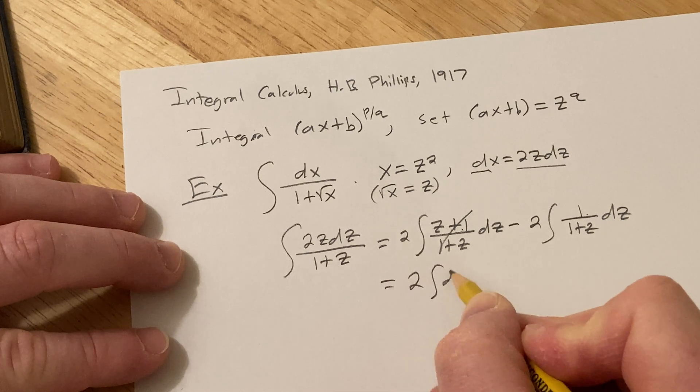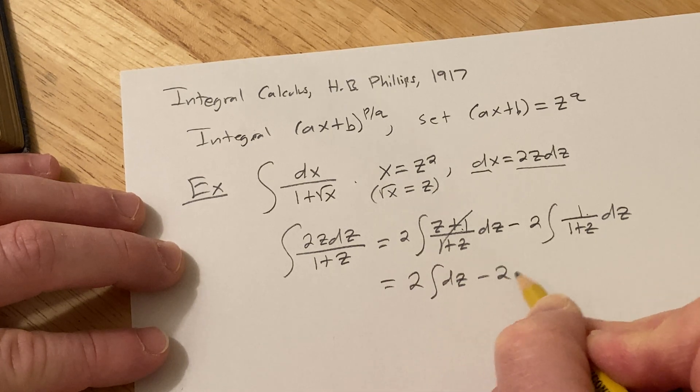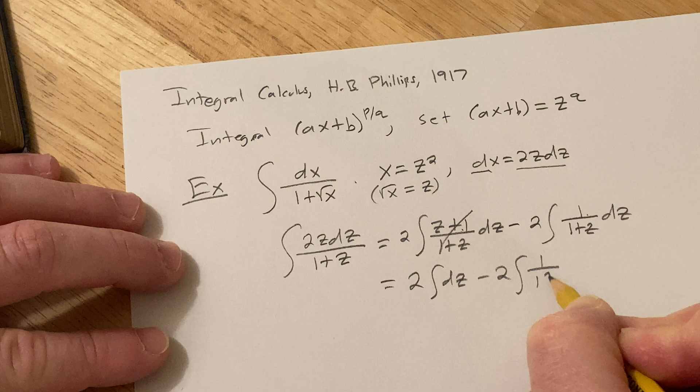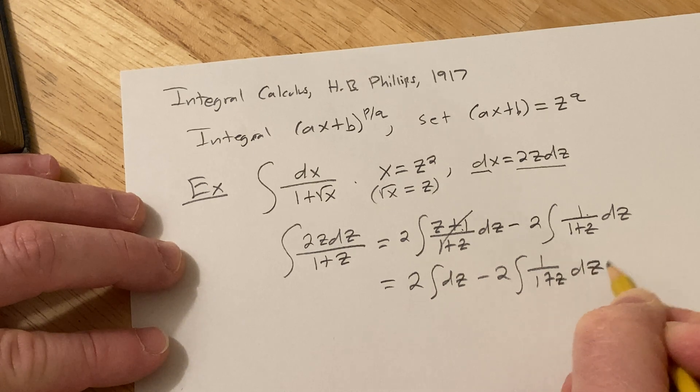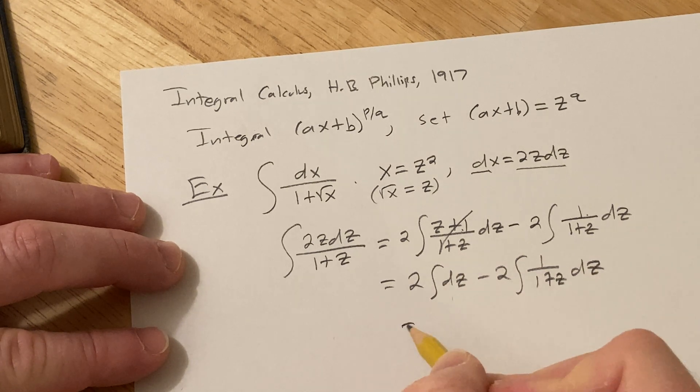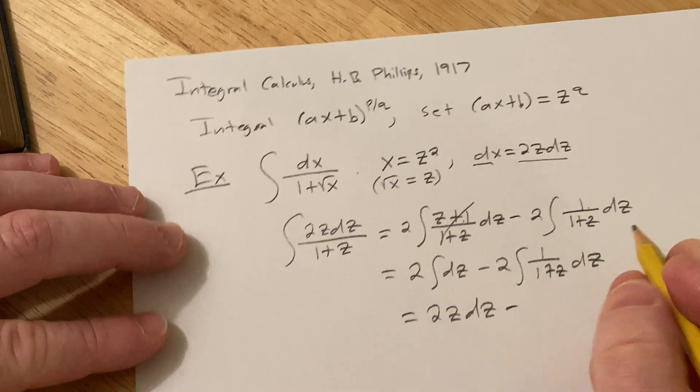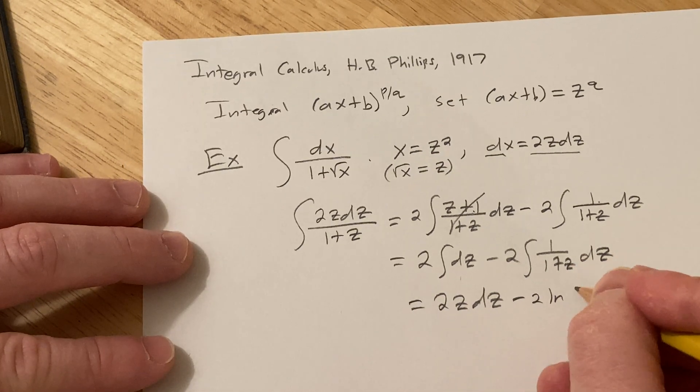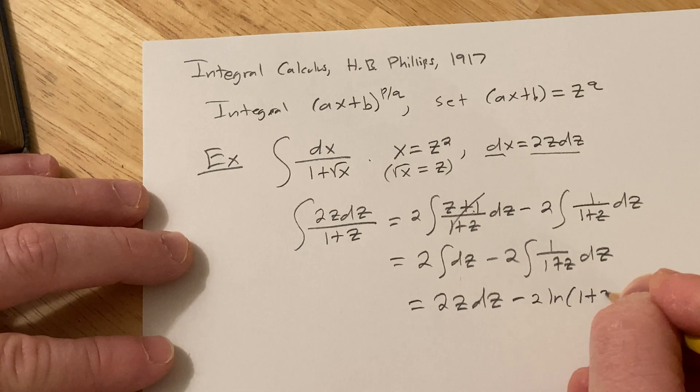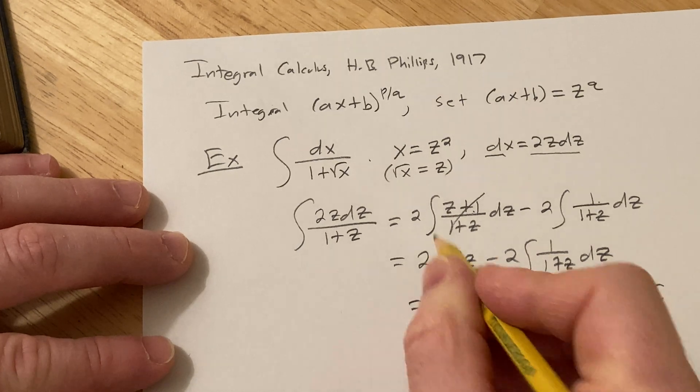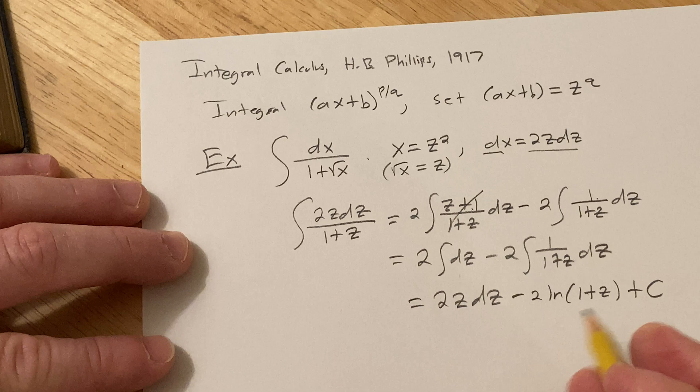We end up with 2 integral of dz minus 2 integral of 1 over 1 plus Z dz. This is 1, it integrates to simply Z. So we get 2Z. This is minus 2 natural log 1 plus Z. Notice I omitted the absolute value because Z is the square root of X. So this is 2...